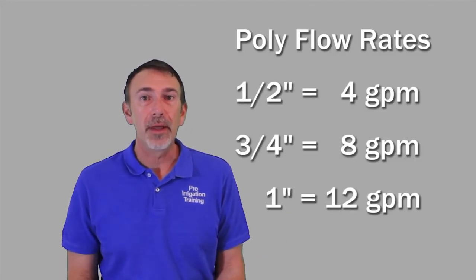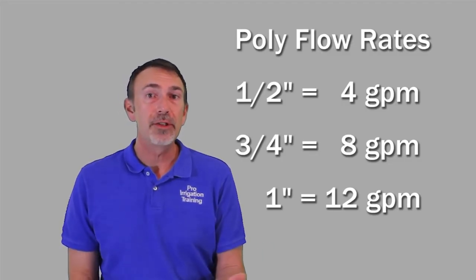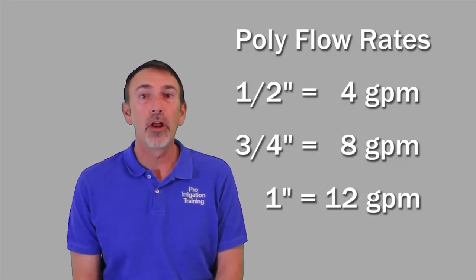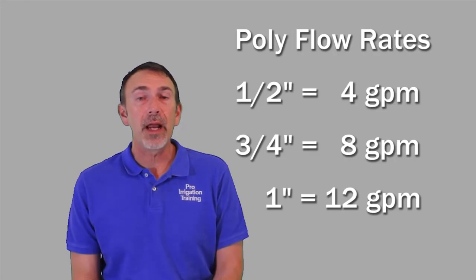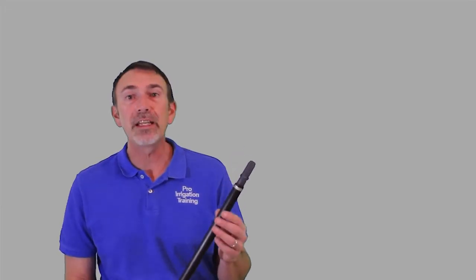So, the half inch only gets four gallons per minute. Three-quarter inch piece of polyethylene pipe will flow up to eight gallons per minute, and a one inch piece of pipe will flow 12 gallons per minute. Now, if you compare that to a piece of PVC, say a Class 200 piece of PVC that'll flow 16 gallons per minute, you'll see that this may not always be the most economical solution, but depending on the climate, it may be the only solution that you want to use.